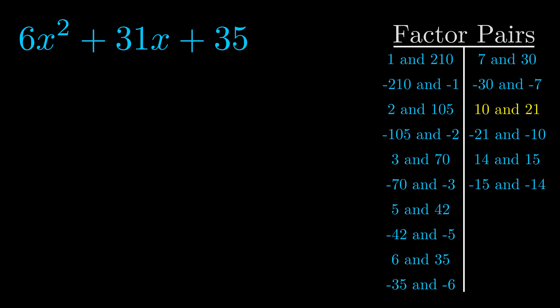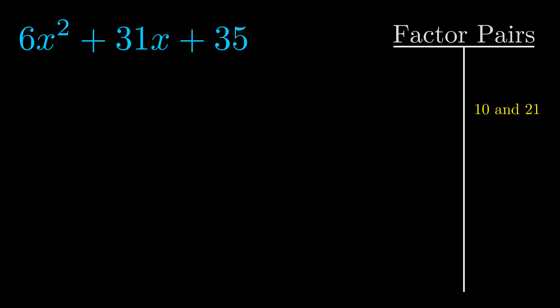And really this is the only factor pair that we need. Now once we have this factor pair what we want to do is we want to use it to split up the b value.